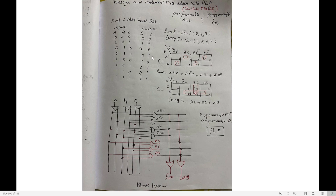Now write the outputs. 1+1 gives sum 0, carry 1. 1+0+0 gives 1 and 0. Finish this truth table. After completing it, write the minterms. For sum, the positions where sum is high are: 1st position (1), 2nd position (2), 4th position (4), and 7th position (7). So sum minterms are 1, 2, 4, 7. For carry, the positions where carry is high are the 3rd, 5th, 6th, and 7th positions — so carry minterms are 3, 5, 6, 7.